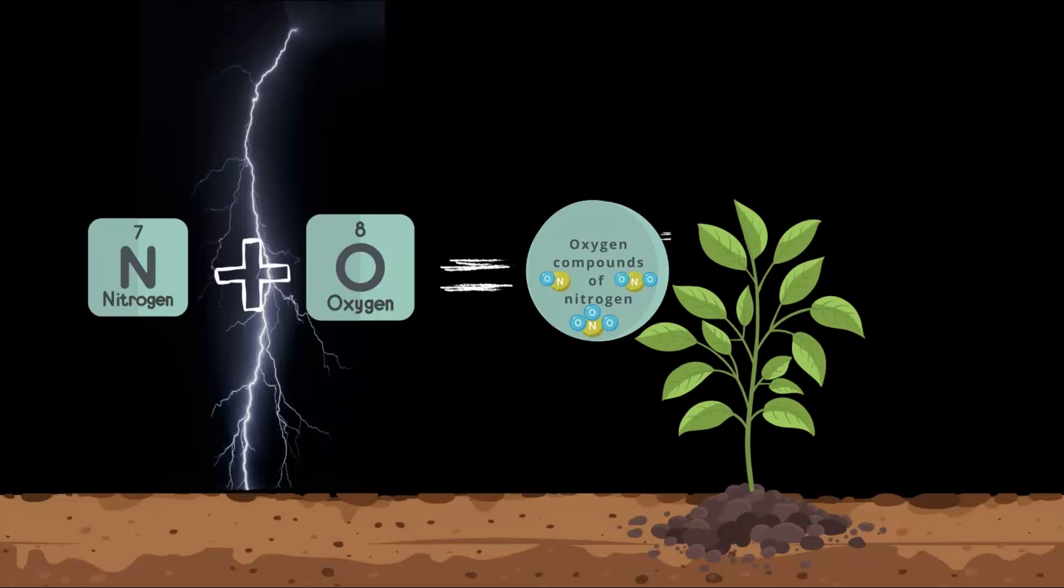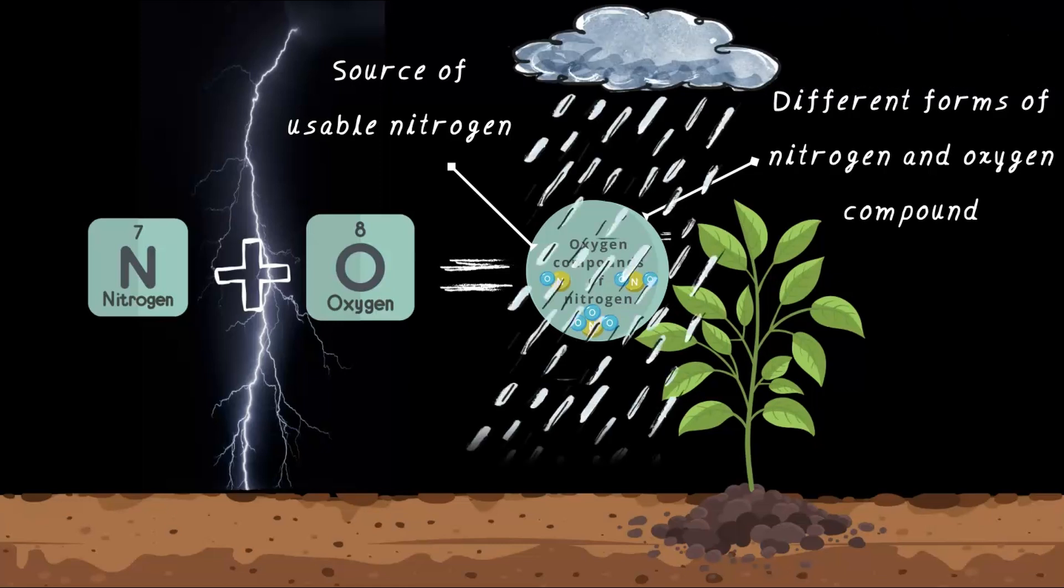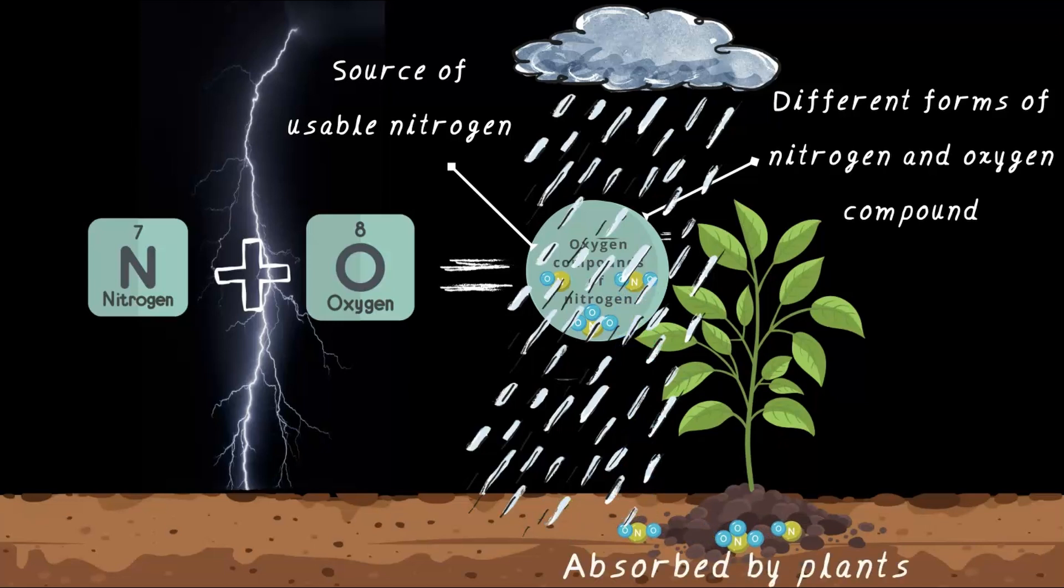You'll study about these compounds in detail in higher classes. Let's ignore what these compounds are for the time being. Right now, understand that these are just different forms of nitrogen and oxygen combined together to form compounds. And what makes these compounds special? Because these are actually sources of usable nitrogen. But the big question remains, how do these sources of usable nitrogen reach the soil? That's where rain comes in. When it rains, these nitrogen compounds dissolve in the raindrops and reach the soil. And once they get there, the plant roots absorb them, making the nitrogen available for the plants.